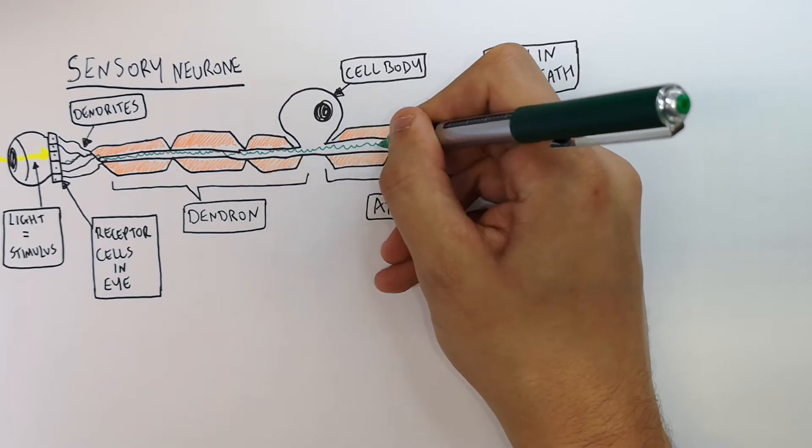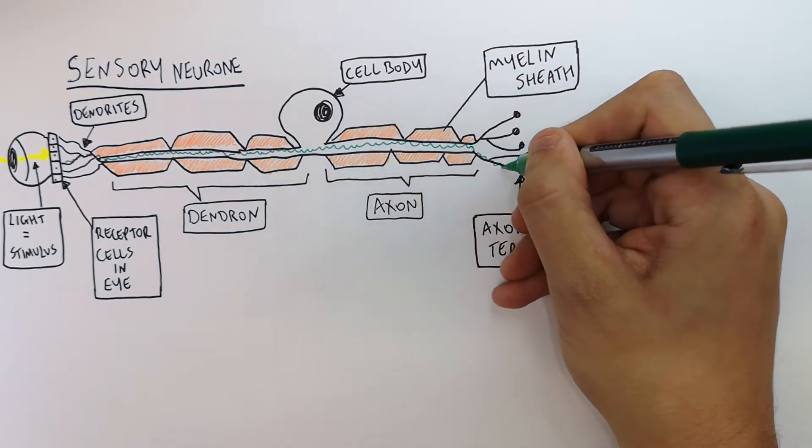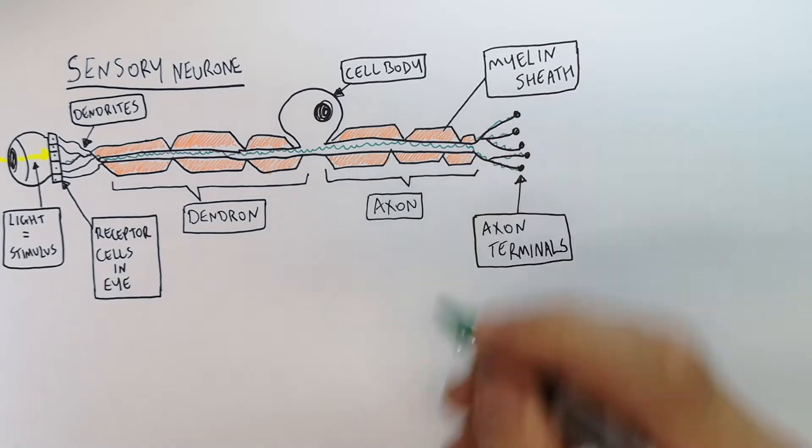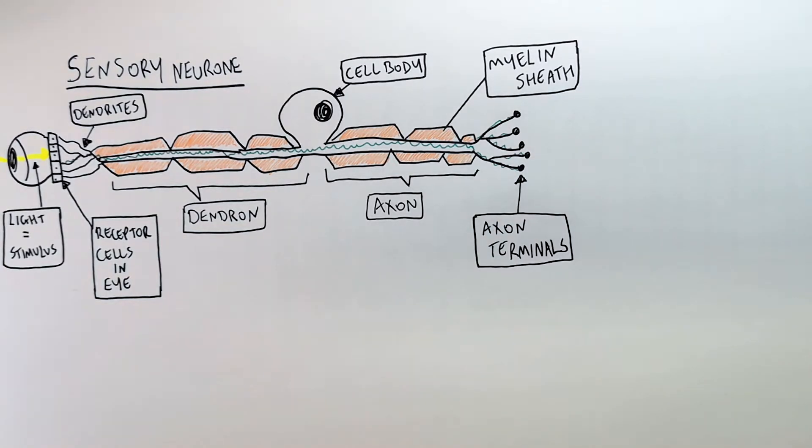down the dendron, into the axon and then to the axon terminals at the end. That is the directional travel of an electrical impulse.